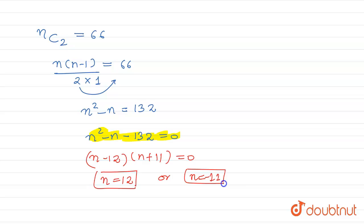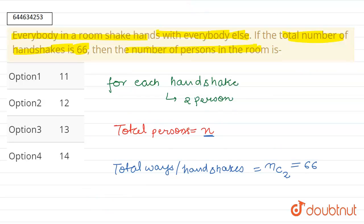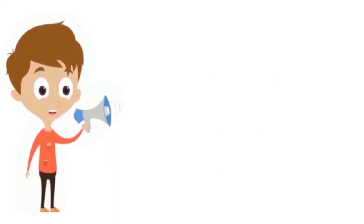Obviously n equals to -11 is not possible because persons cannot be negative, right? So n equals to 12 is our answer. Now if we see in the options, option second is the right answer.